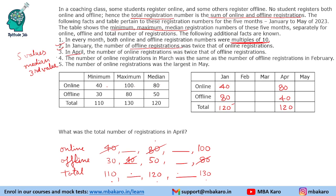The number of online registrations in March was the same as the number of offline registrations in February. So if offline in February is some value A, then online in March is also A. We will figure out the value of A using the remaining constraints.